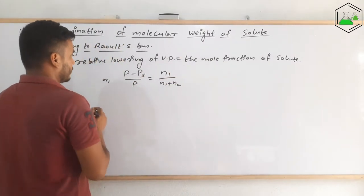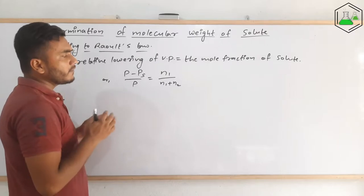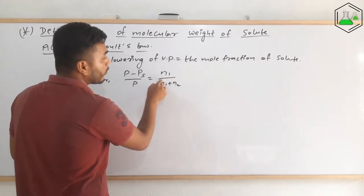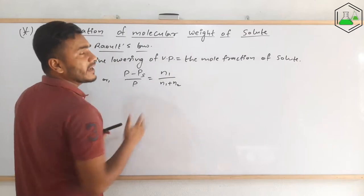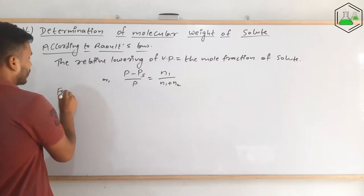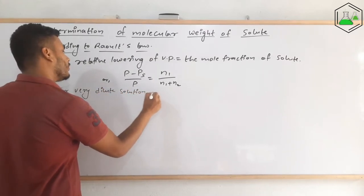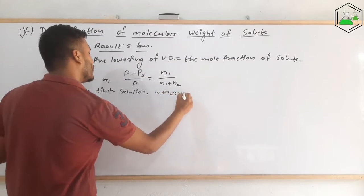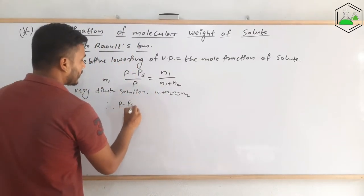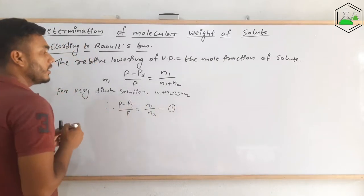Now, if we consider a very dilute solution — meaning the amount of solvent is very high compared to the solute — then the number of moles of solute in the denominator can be neglected because it will be very small compared to n2. So for a very dilute solution, n1 plus n2 is nearly equal to n2. We can neglect n1 in the denominator, so the expression becomes: (P minus Ps) / P = n1 / n2. This is equation number one.